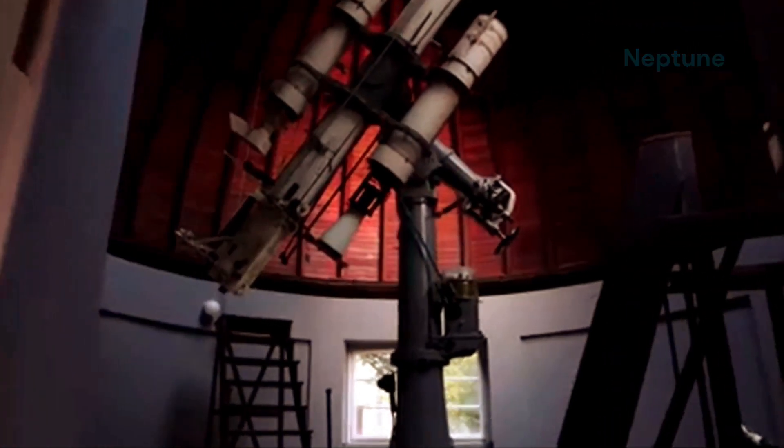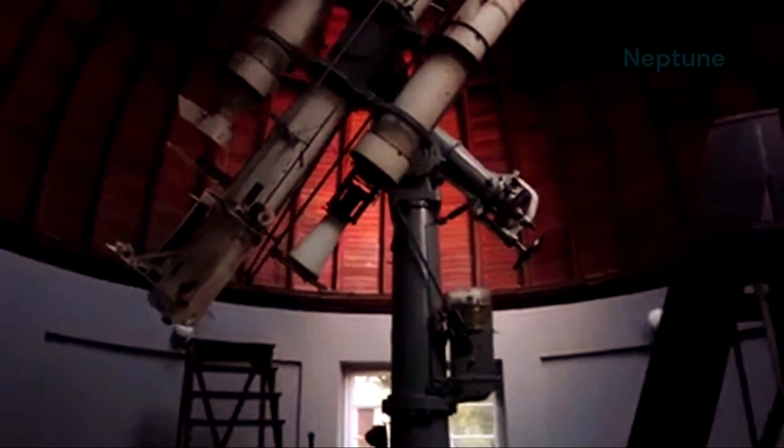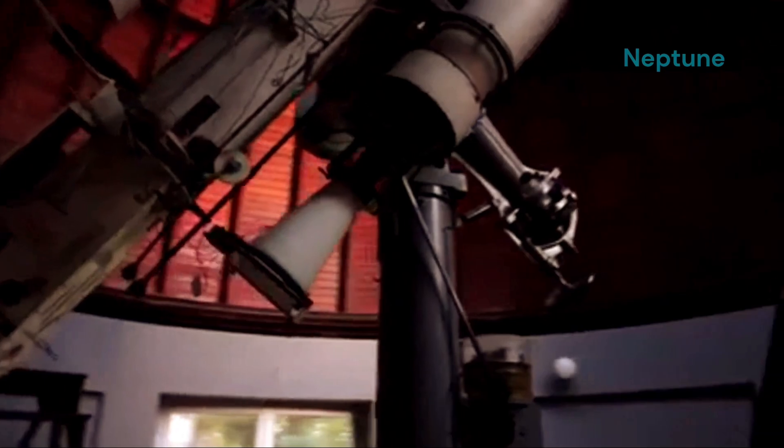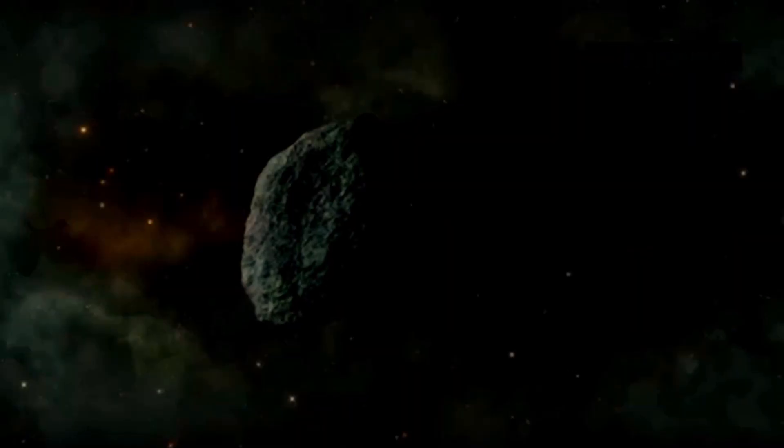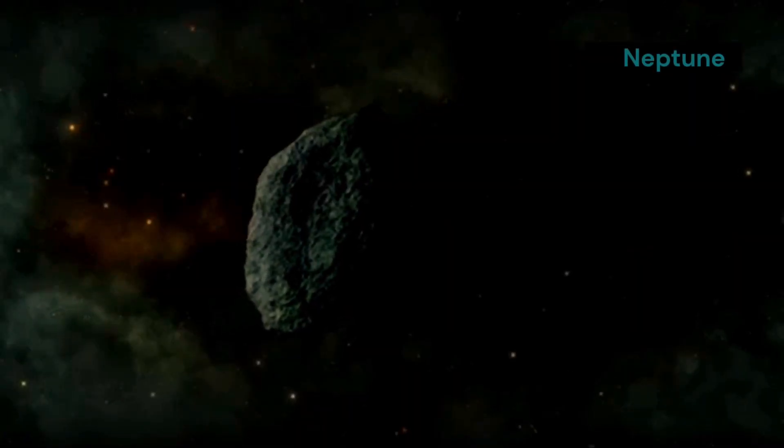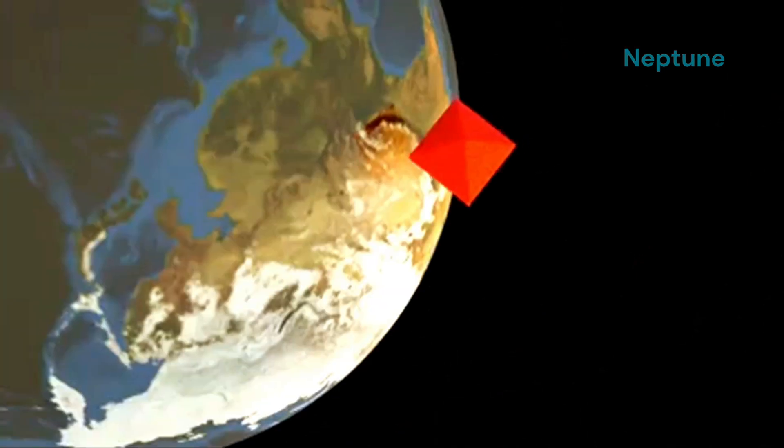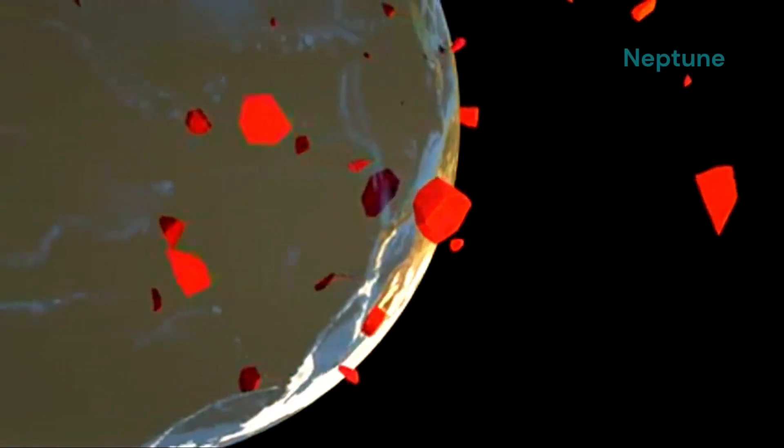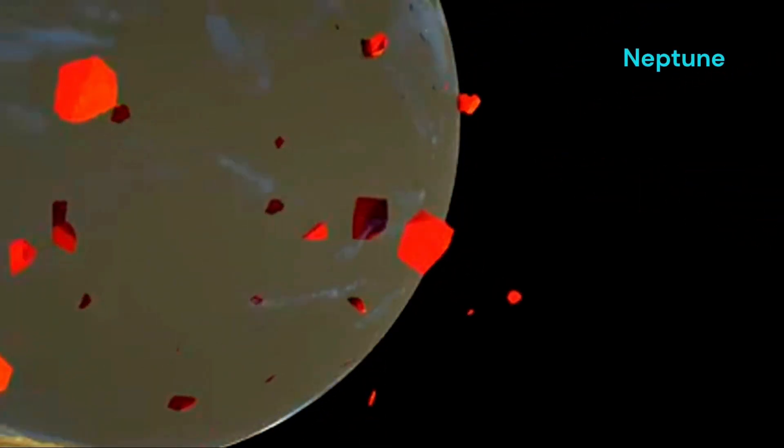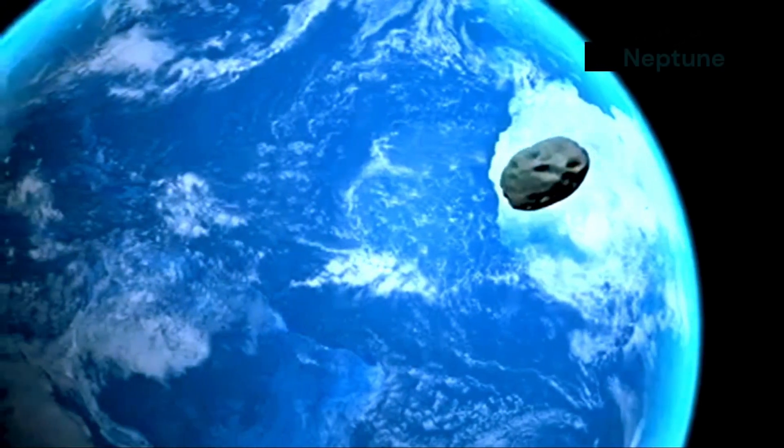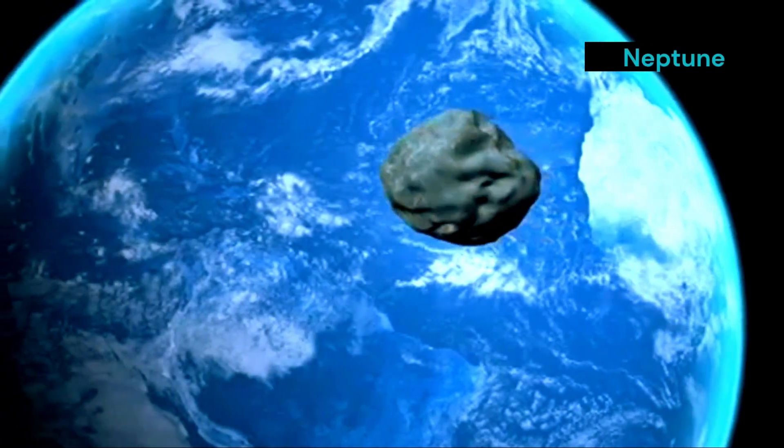Cosmic billiards: collisions in the solar system's history. The solar system is a dynamic place. Even today, collisions continue to shape its evolution. Asteroids and comets regularly collide with planets and moons, leaving behind craters and other scars. One of the most famous examples is the Chicxulub impact, which is thought to have wiped out the dinosaurs 66 million years ago. While such catastrophic events are rare, they remind us of the power of cosmic collisions.